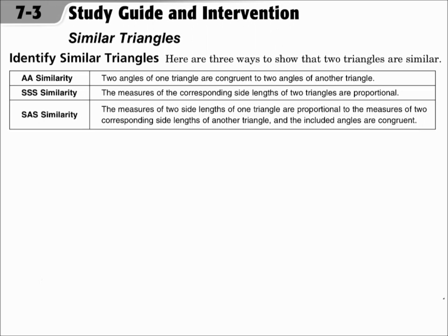Identify similar triangles. Here are three ways to show that two triangles are similar. Angle-angle similarity: when two angles of one triangle are congruent to two angles of another triangle. Side-side-side similarity: when the measures of the corresponding side lengths of two triangles are proportional.